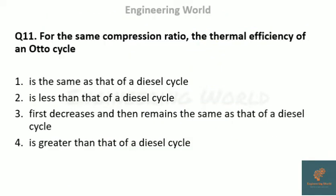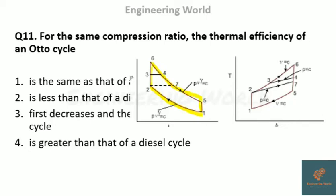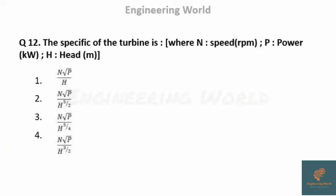Question 11: for the same compression ratio, compare thermal efficiency of Otto, Diesel, and Dual cycles. Looking at the PV diagram, the Otto cycle is represented by 1-2-6-5, the Diesel cycle by 1-2-7-5, and the Dual cycle by 1-2-3-4-5. The area under the PV diagram represents work output. For the same compression ratio, the area is largest for the Otto cycle. Hence, thermal efficiency is greatest for the Otto cycle compared to Diesel and Dual cycles.